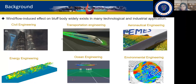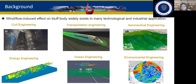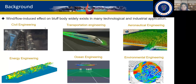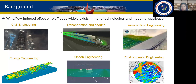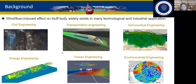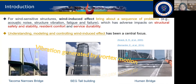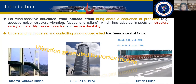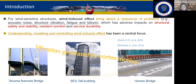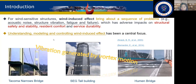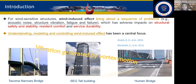So first of all, I'm going to talk about the background part. As you can see in the slide, the wind-induced effect has many common engineering applications such as signal, transportation, aeronautics, energy, ocean, and engineering. The wind-induced effect could cause severe disasters on bridges or buildings, as shown in this animation. Therefore, it will endanger structural safety, ridden comfort, and service durability.